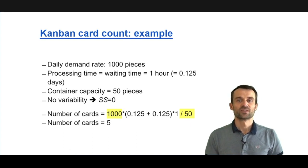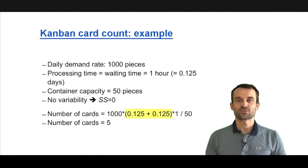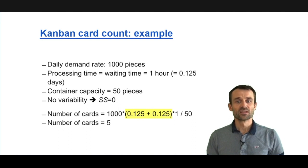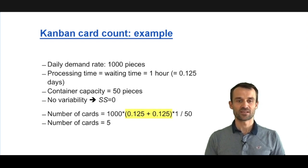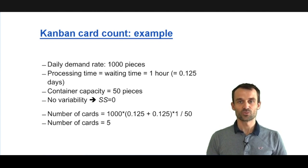Flow time is one hour of processing and one hour of waiting, so two hours, which is one quarter of a day. That gives us a flow rate of 20 multiplied with flow time of one quarter of a day, so in the end we have 5 Kanban cards for this simple example.